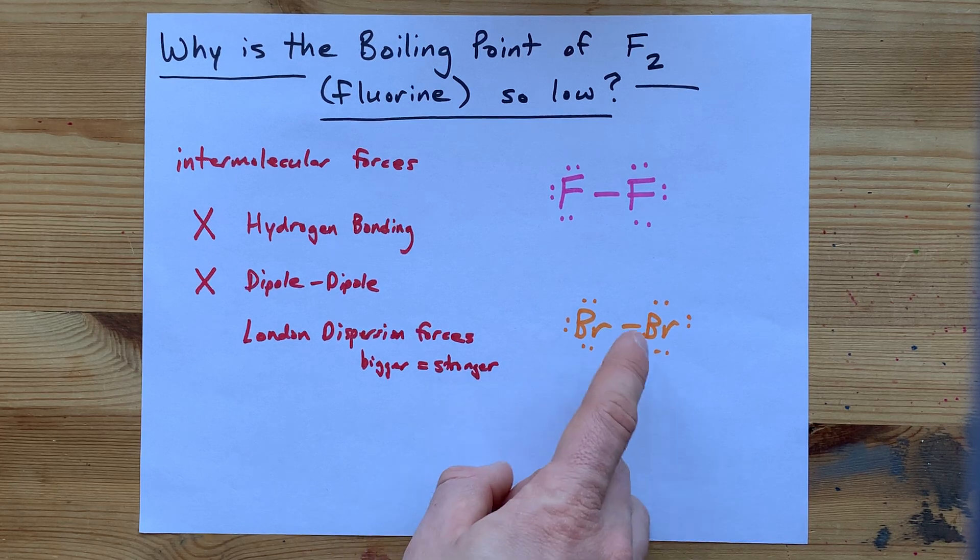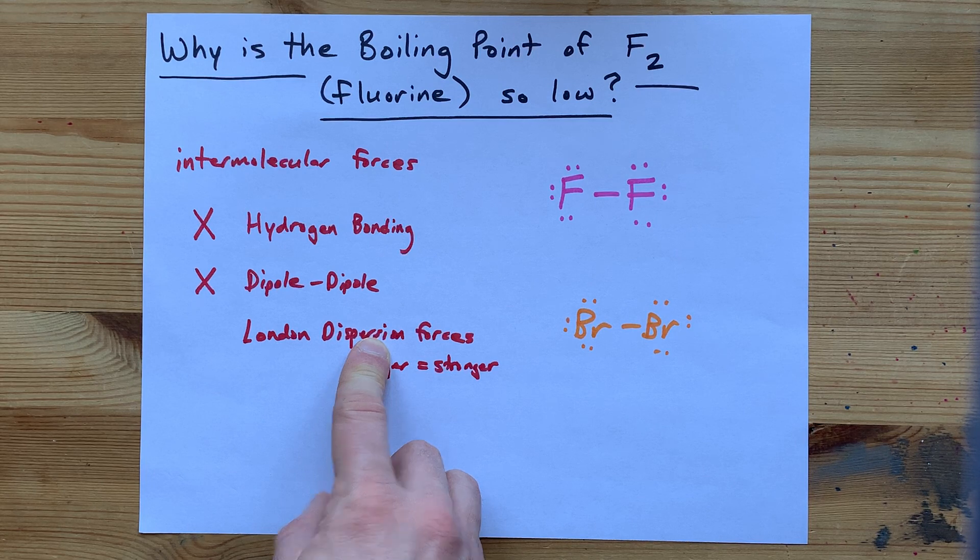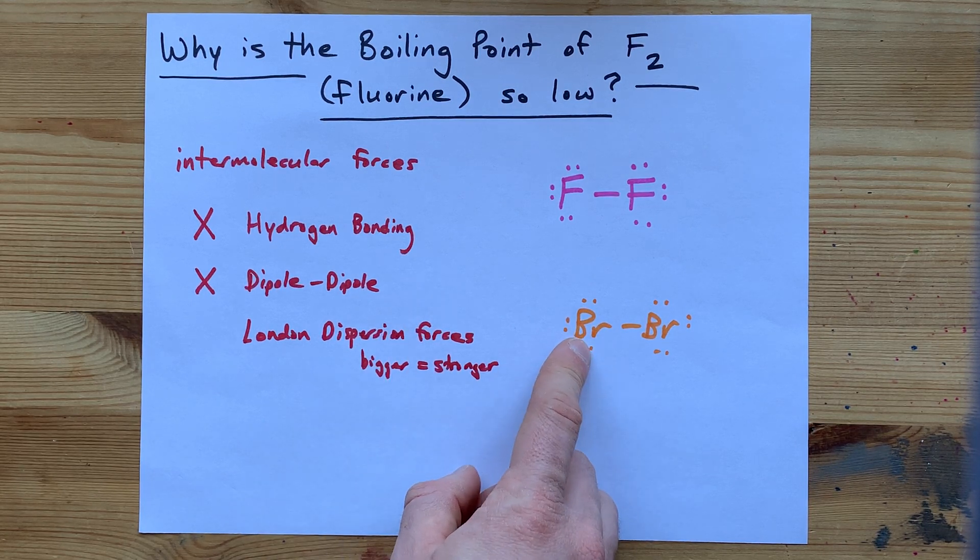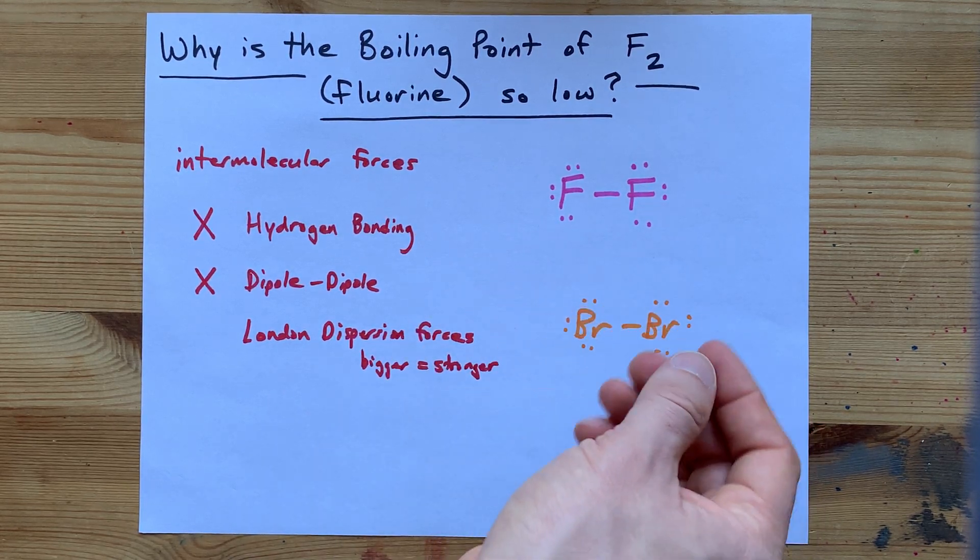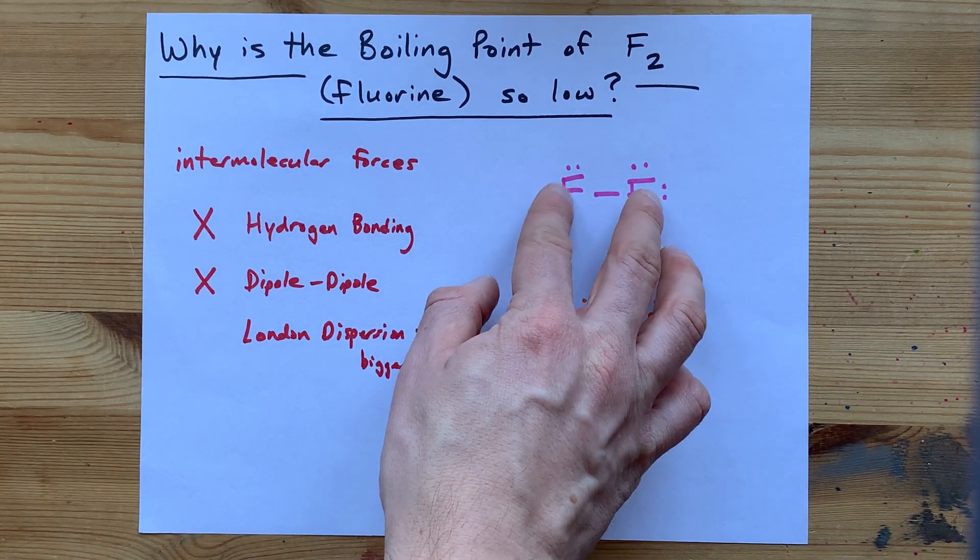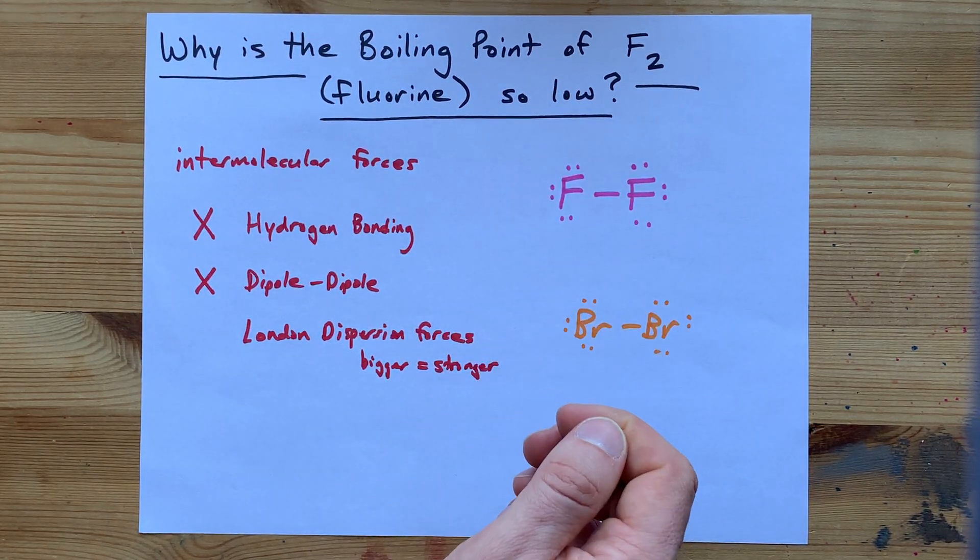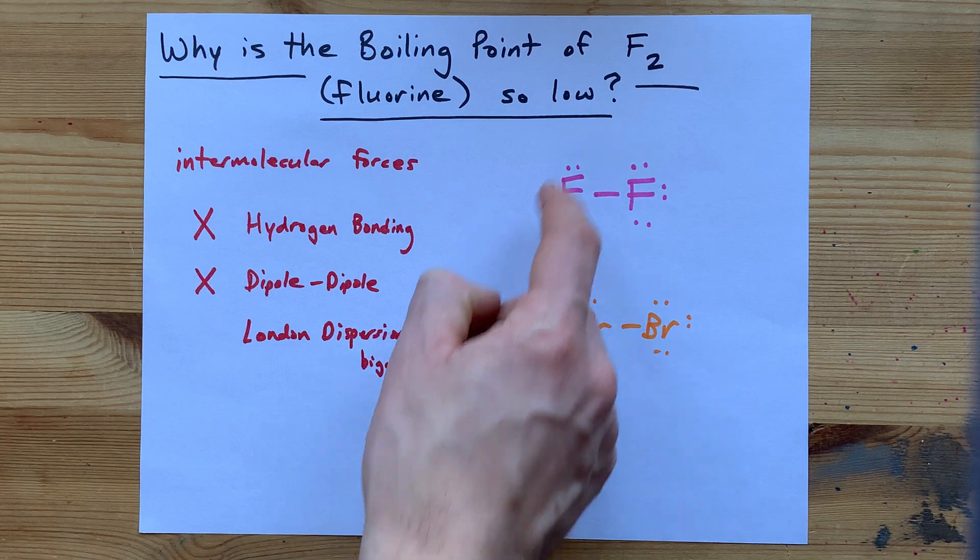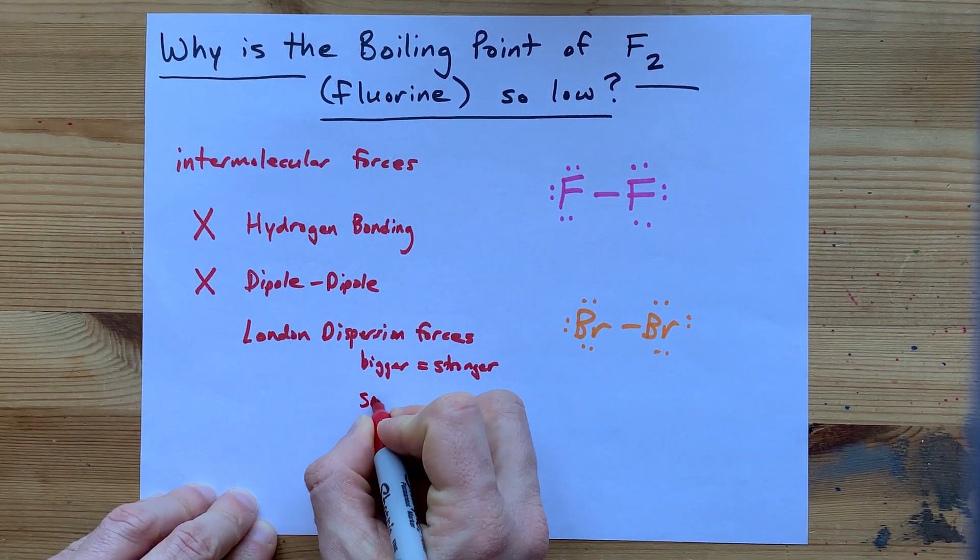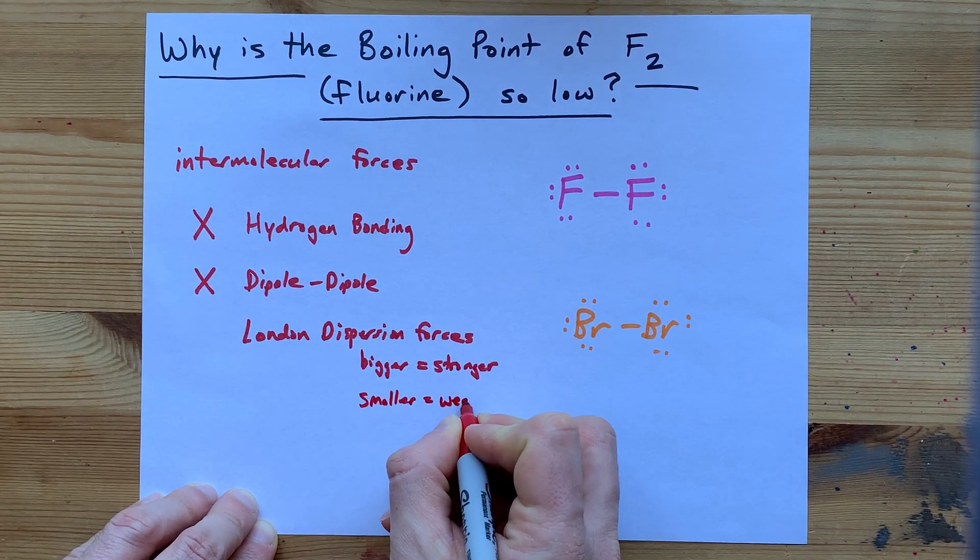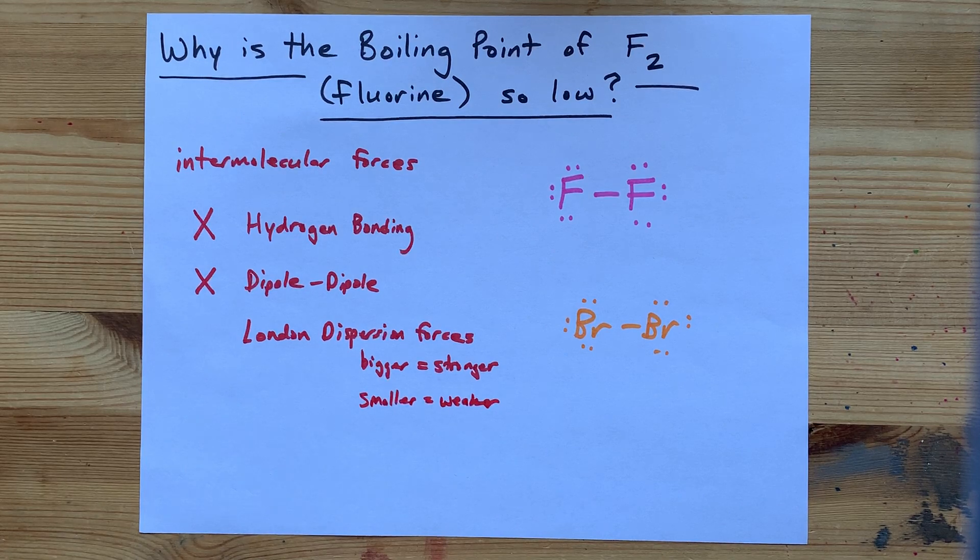So that means that bromine has stronger London dispersion forces and probably a higher boiling point than fluorine, whose electrons do not have as much freedom because they are closer to the nuclei of the atoms because it's a smaller atom. And so, the London dispersion forces between fluorine molecules is even weaker. Smaller equals weaker if bigger molecules have stronger London dispersion forces.